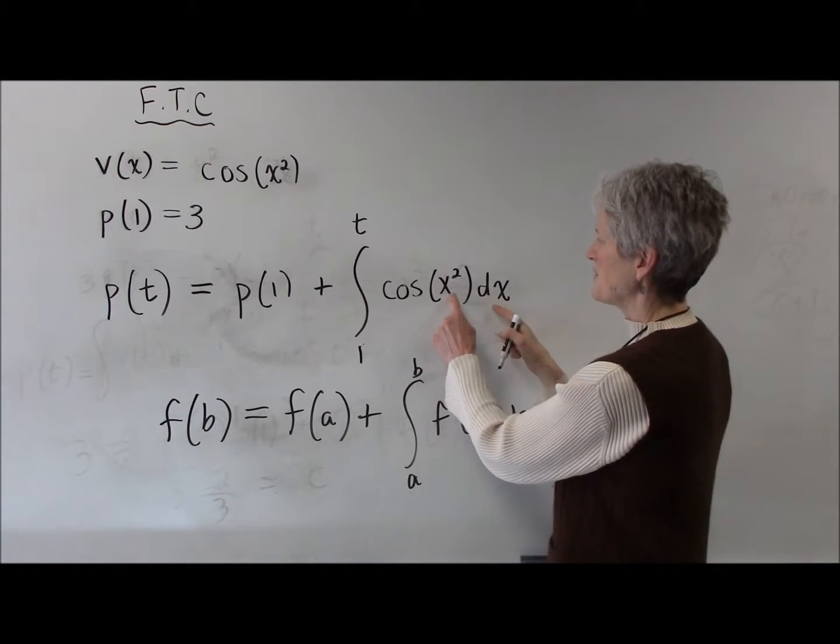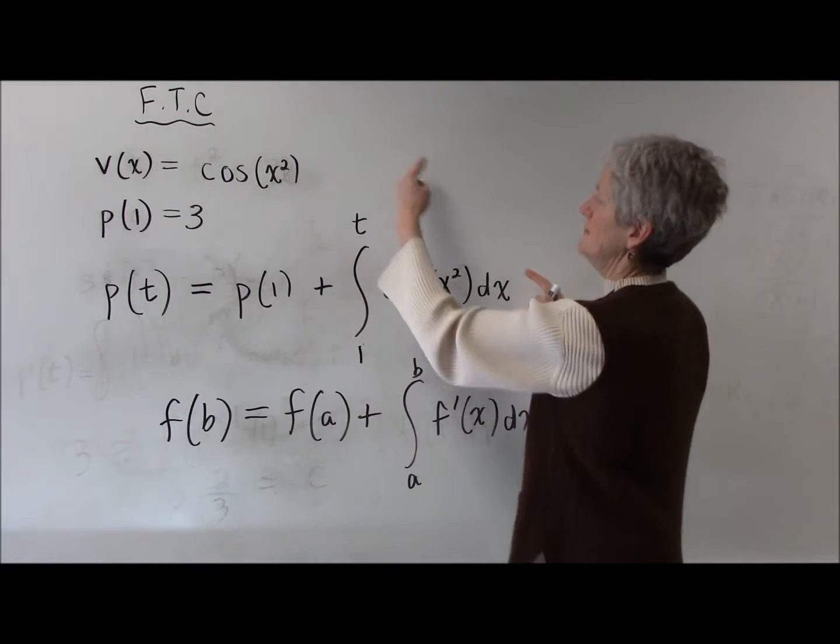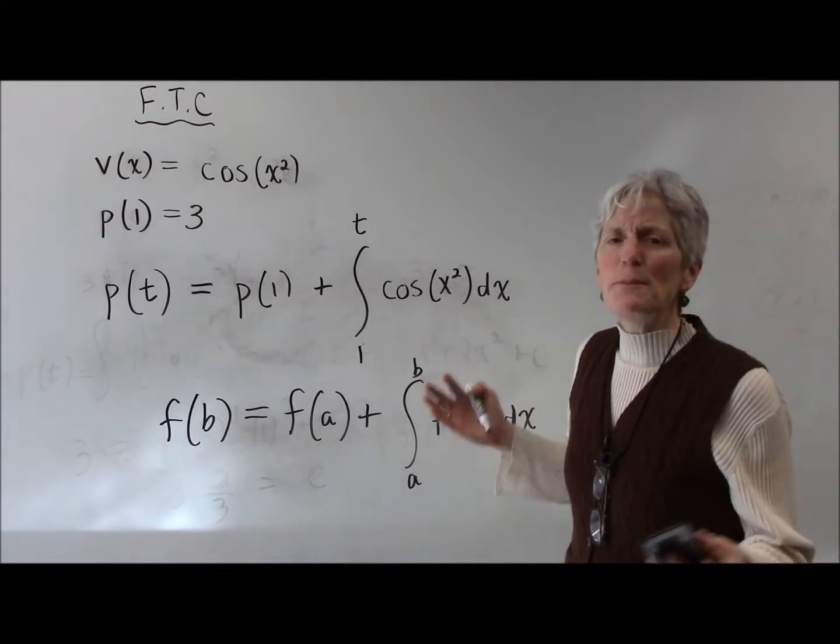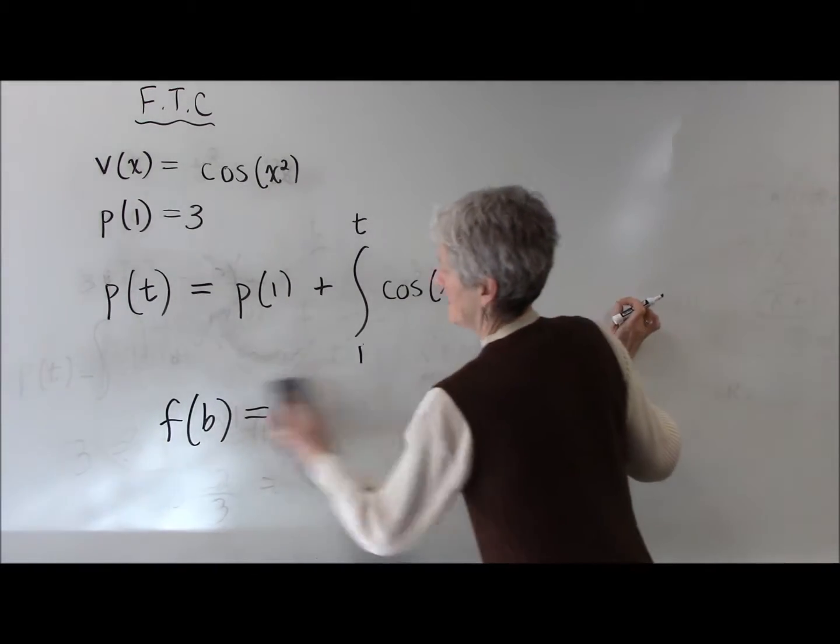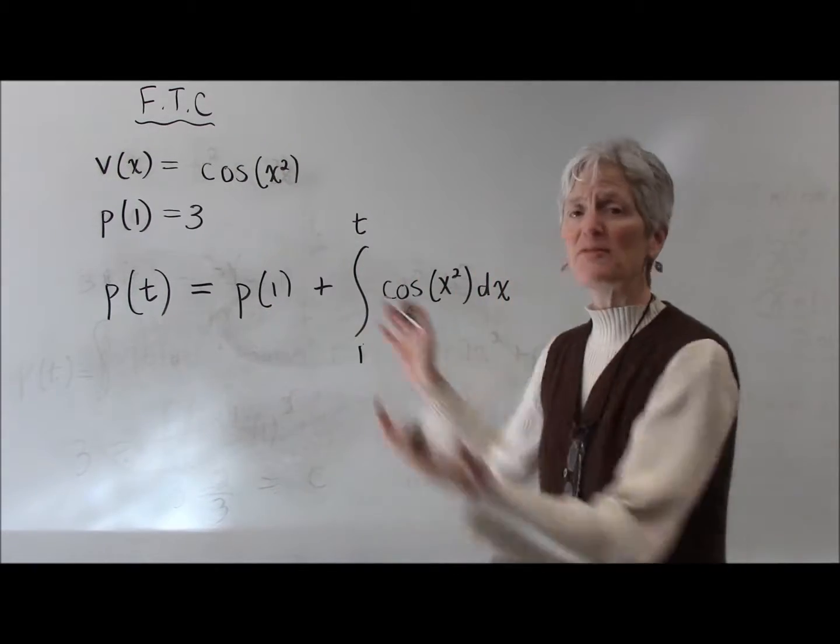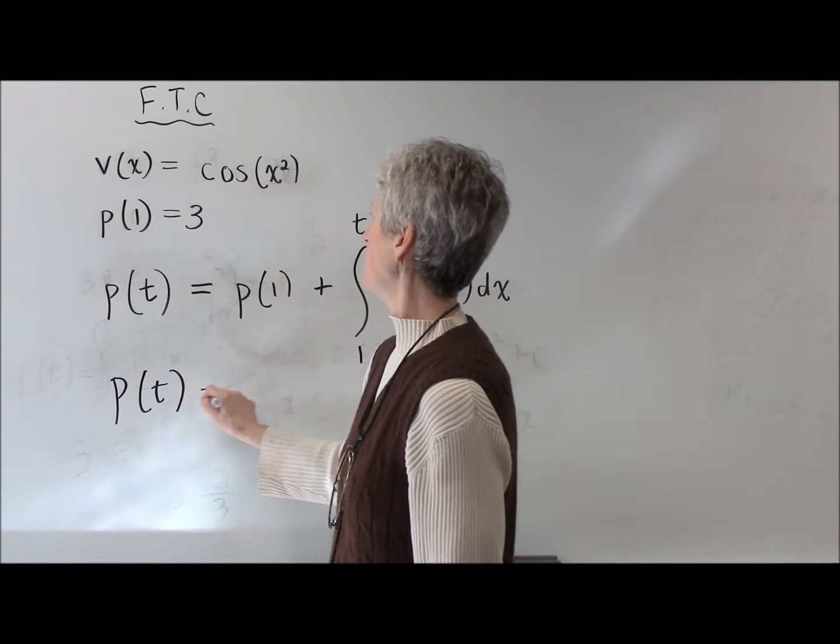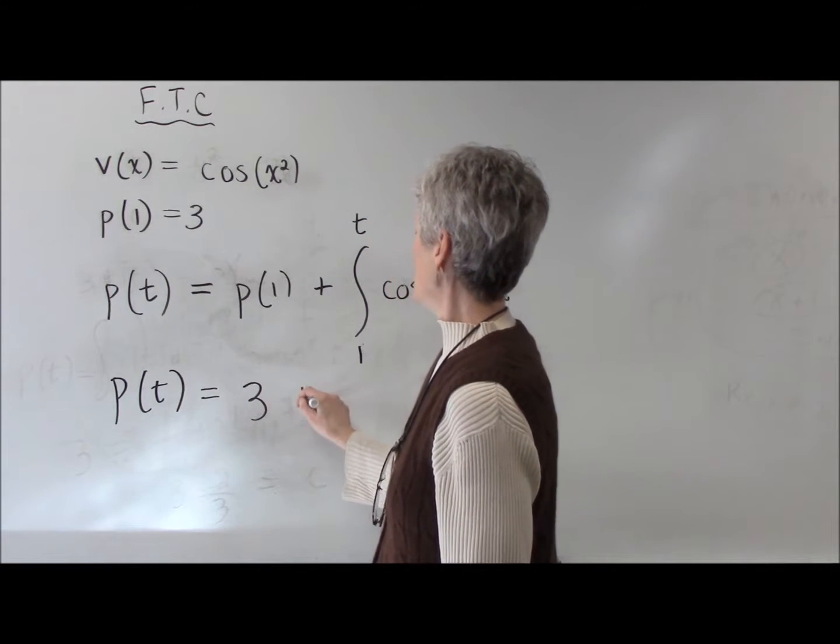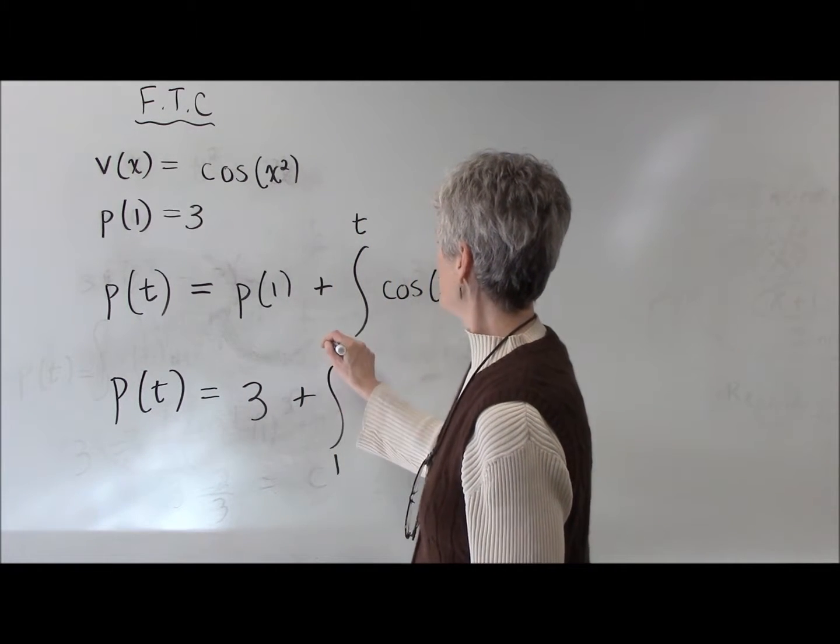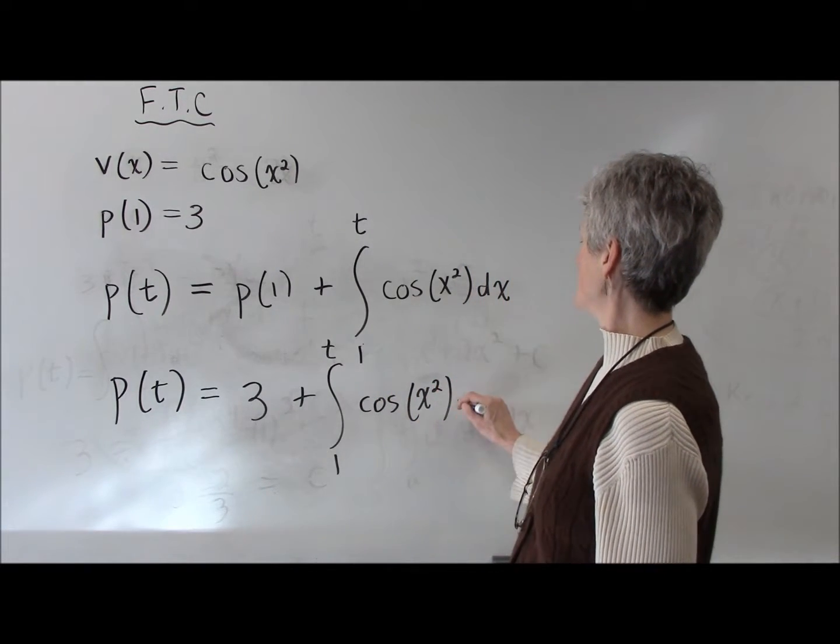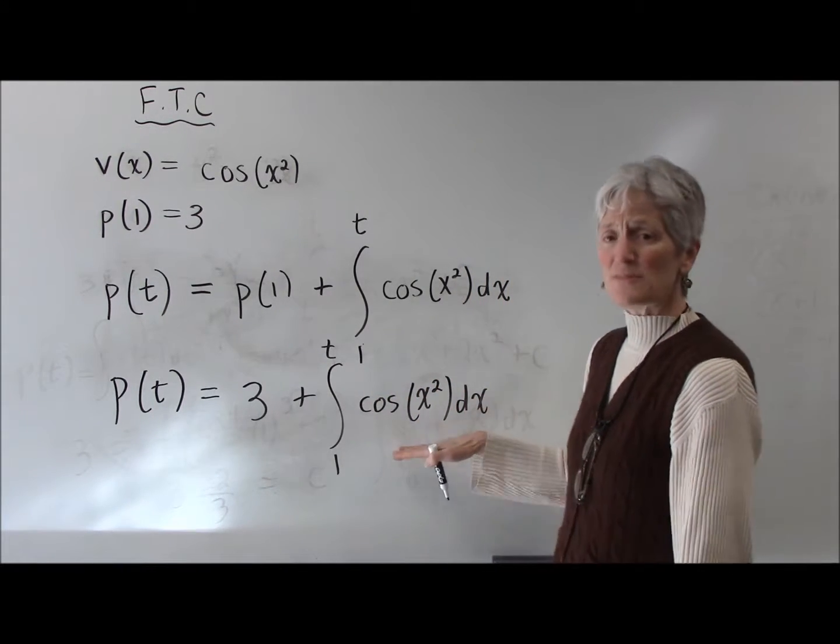of the cosine of x squared dx. And this is sometimes called a dummy variable, right? I'm analyzing it from 1 to t. So I have been able to write a function that's going to give me my position. And I can go further and say, p of 1 is 3, so 3 plus the integral from 1 to t of cosine of x squared dx. There it is. That's my position function.